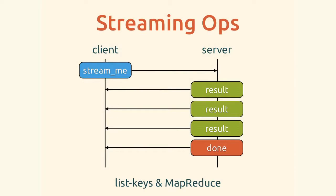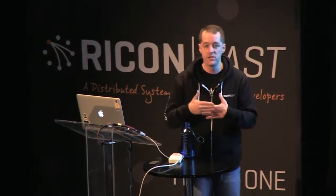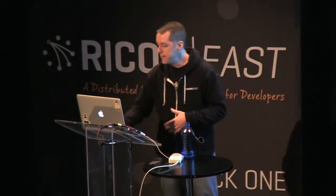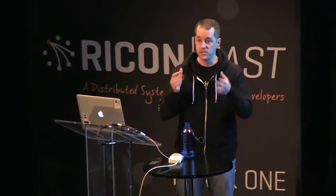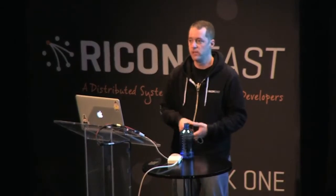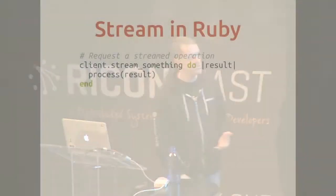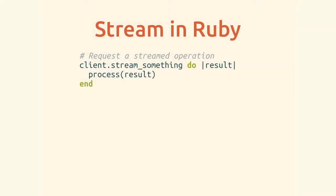Streaming operations are great for large responses because both the client and the server don't have to buffer the entire response to do useful work. The client can proactively process responses as they come in. It fits nicely with the asynchronous delivery of messages in distributed systems — as soon as you get a result from some other computer doing some work, you can send it on to the client immediately. Riak supports two of those operations: list keys and MapReduce. In HTTP, this is implemented as chunked encoding, with blocks prefixed by length. In protocol buffers, it sends discrete messages until one has a 'done' flag.